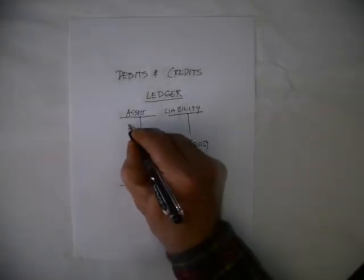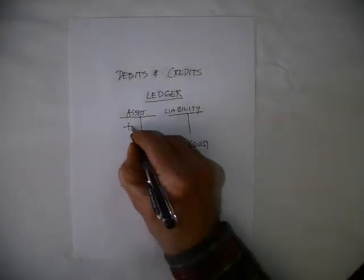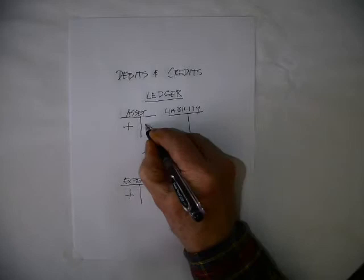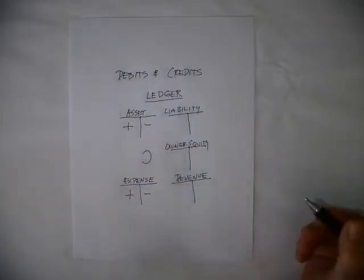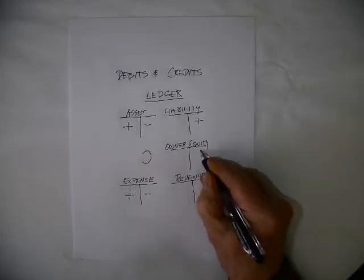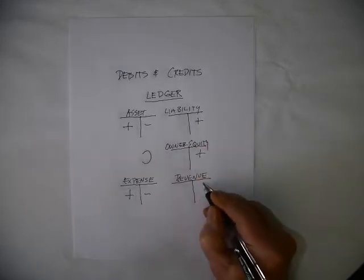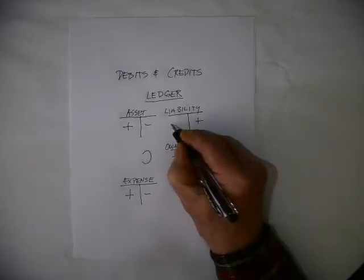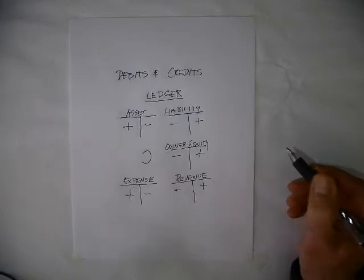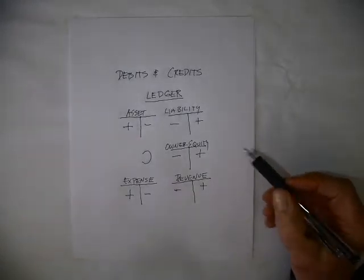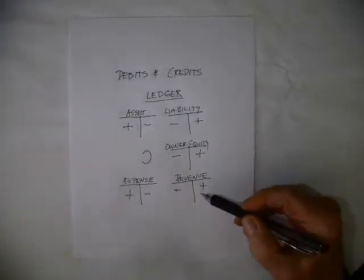I'm going to show you where the pluses and the minuses go. For asset and expense, the increased side is on the left side. For liability, owner's equity, and revenue, the increased side is on the right side. So every single T-account will follow this particular pattern.